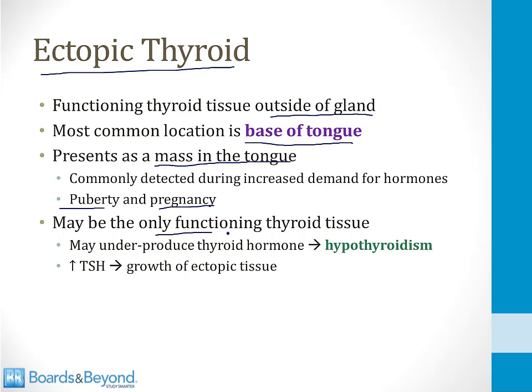Occasionally, this is the only functioning thyroid tissue present — thyroid tissue in the tongue but not anywhere else in the neck. When this happens, patients may underproduce thyroid hormone, leading to hypothyroidism. This raises TSH, which stimulates growth of the ectopic tissue, making the tongue mass larger. If the mass is removed, the patient will have hypothyroidism after surgery and will need hormone replacement therapy.